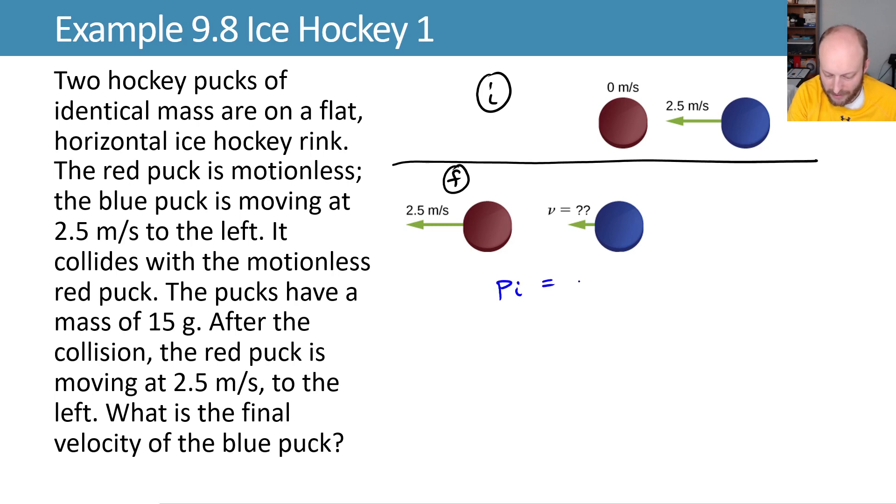I can then say that if my total momentum of my system initially is equal to my total momentum of my system finally, that means that my mass of my red puck times my velocity of my red puck initially plus my mass of my blue puck times my velocity of my blue puck initially has to equal the same stuff finally.